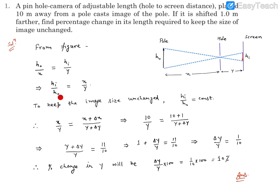So we can claim that x by y must be equal to x plus delta x, that means total x thereafter, divided by y plus delta y. Now x is the value which is known to us as 10 meters. y is the initial distance between the hole and screen.